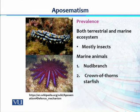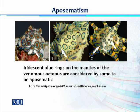Aposematism is prevalent in both terrestrial and marine ecosystems. Insects mostly follow aposematic strategies, but certain marine animals and mammals also use it — as seen with the honey badger. In marine environments, nudibranchs, the crown-of-thorns starfish, and the venomous blue-ringed octopus use bright color patterns and stripes as warning signals against predators. The blue-ringed octopus has iridescent blue rings which are very bright in darkness and serve as a warning signal.